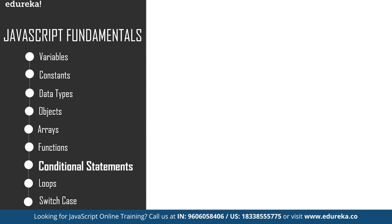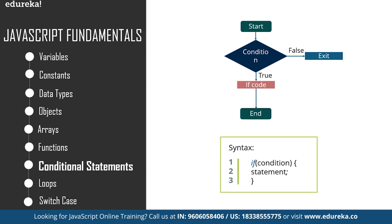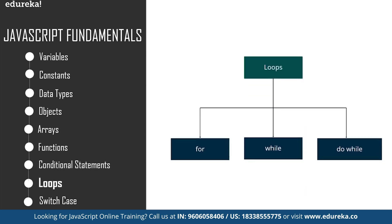For conditional statements, we have the if condition and the else-if condition. A conditional statement is a set of rules performed if a certain condition is met. The if statement executes a block of code only if the specified condition holds true, and the else statement executes a block of code if the same condition is false. Loops are used to repeat a specific block until some end condition is met. There are three categories of loops in JavaScript: the while loop, the do-while loop, and the for loop.